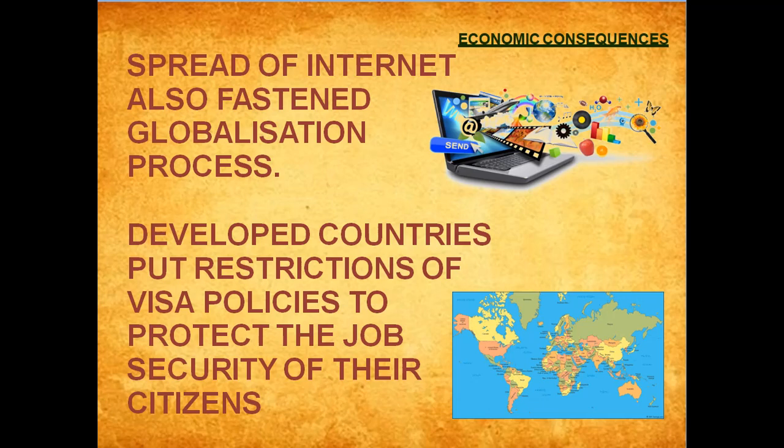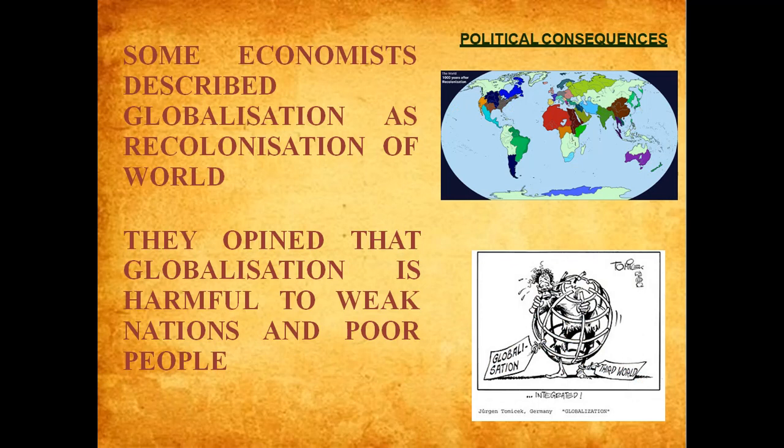But the coin has two sides. If we see the economic consequences of globalization, we can say that globalization has divided the world into rich and poor. This is a type of recolonization. Earlier there was colonization — India was the colony of Britain, and many countries of Africa and Asia were colonies of European countries. Now we can say this is again recolonization: rich countries are controlling the economy of poor countries. It is harmful for weak countries and for poor people.